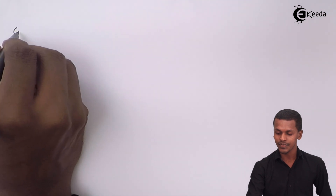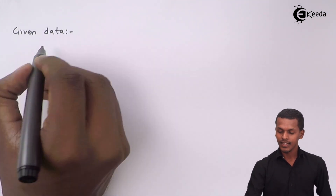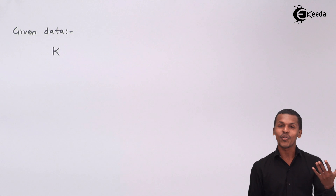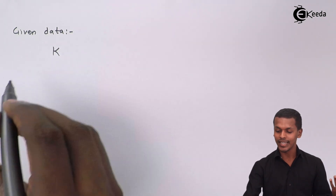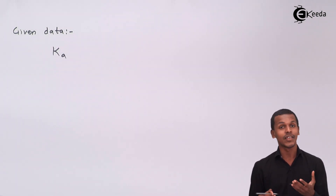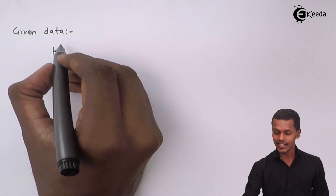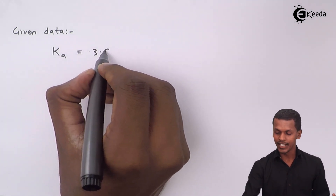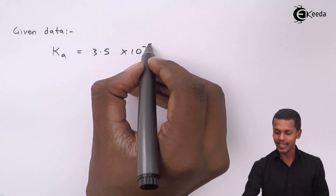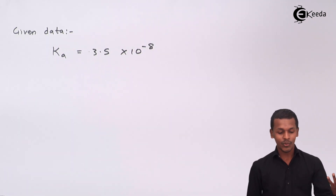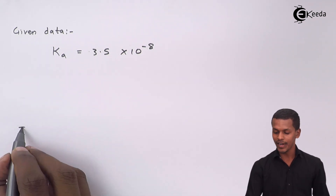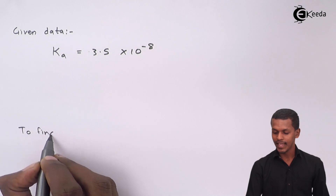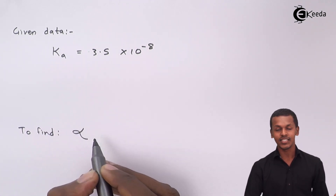They have given us data for a monobasic acid, and the dissociation constant has been given. The equilibrium constant, or dissociation constant for the acid, is Ka. It has been given as 3.5 × 10⁻⁸. And we have to calculate the degree of dissociation, denoted by alpha (α).